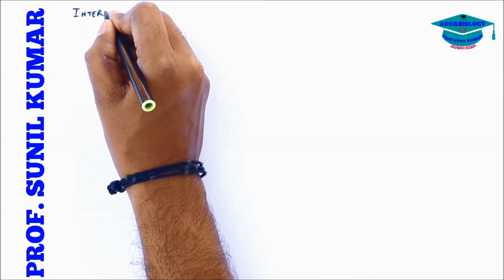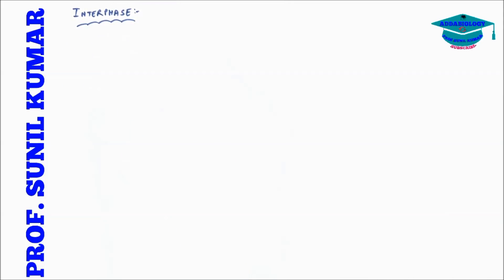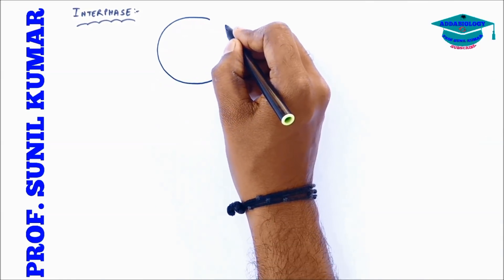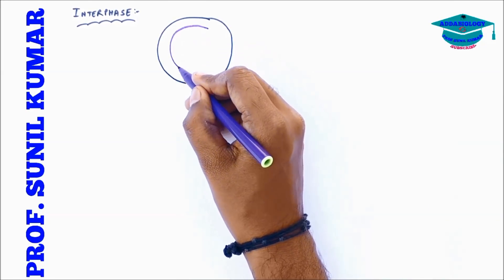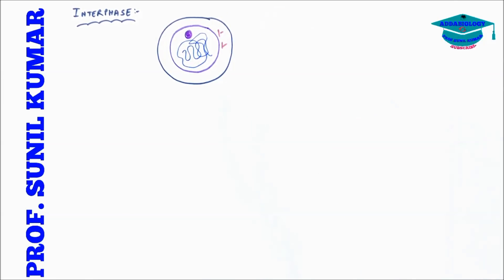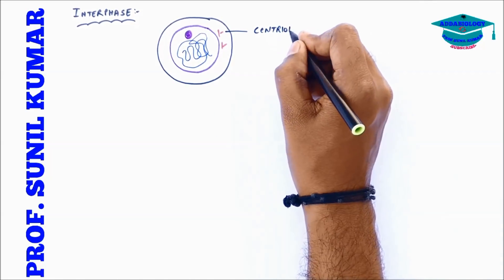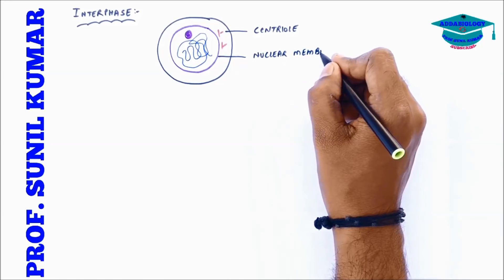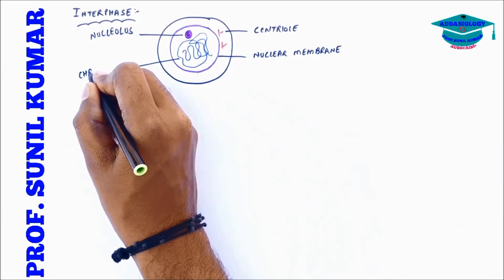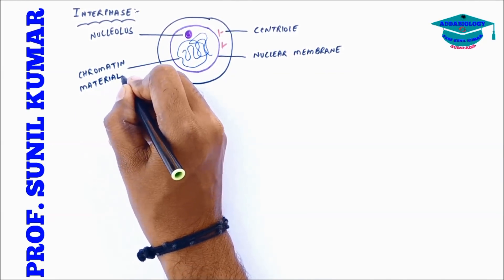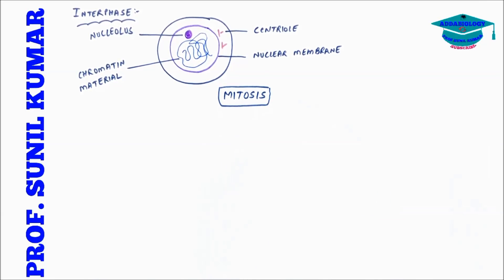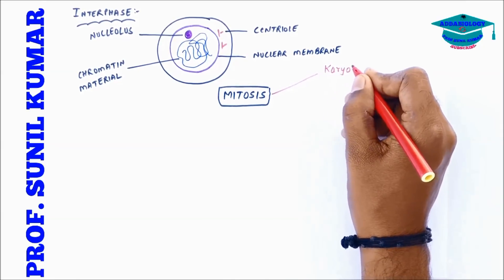Let's understand how the interphase cell will look. After completing interphase, it is going to have a proper nuclear membrane, nucleolus, chromatin material, and a centriole. Since I am drawing a centriole, it is clear that I will be talking about the cell division of an animal cell. If the question refers to a plant cell, do not draw the centriole — just draw polar bodies.